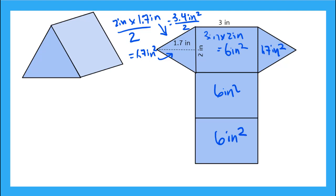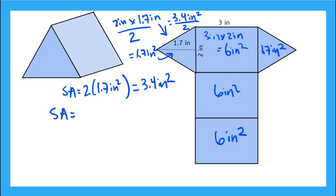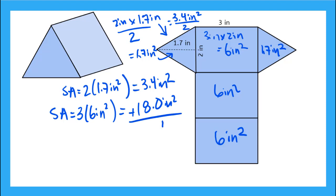The surface area of my bases: I have 2 triangles each with an area of 1.7 inches squared, giving a total of 3.4 inches squared. The surface area of my sides is 3 times 6 inches squared, which is 18.0 inches squared. Adding them together: 3.4 plus 18.0 gives me 21.4 inches squared. That's the total surface area for this triangular prism.